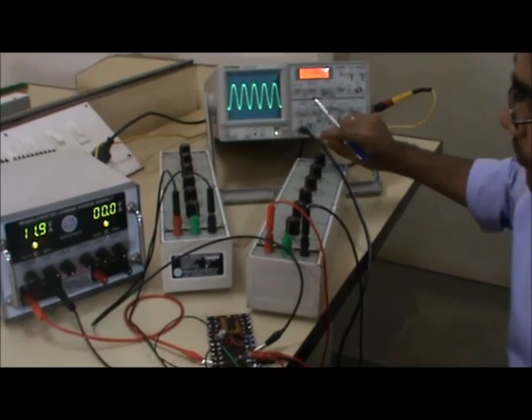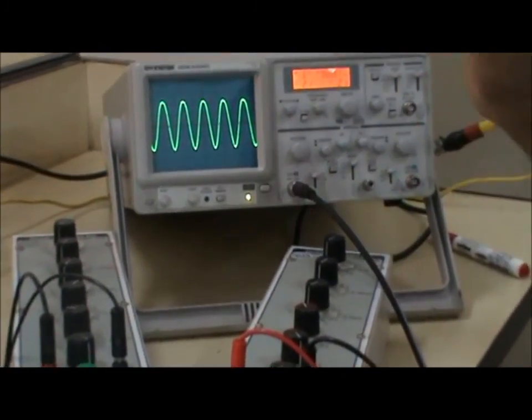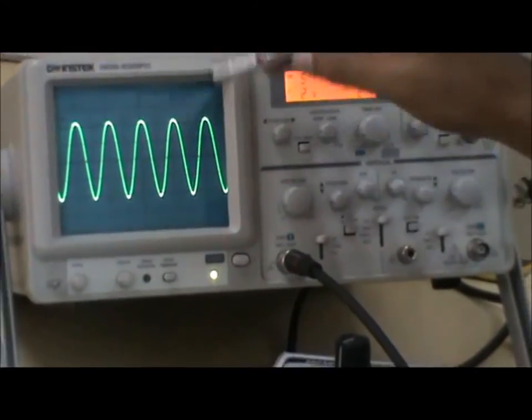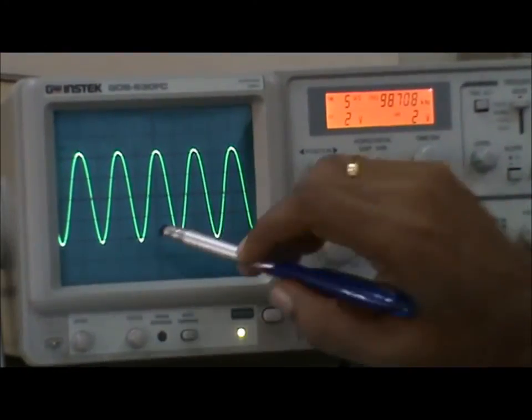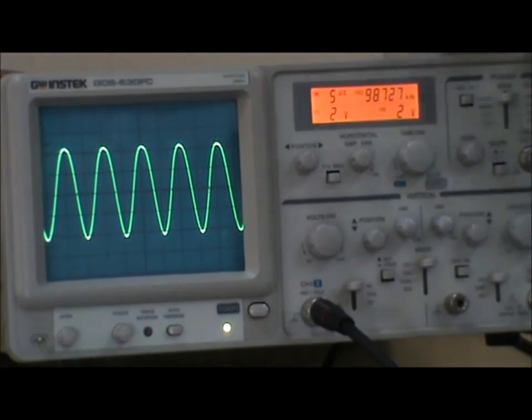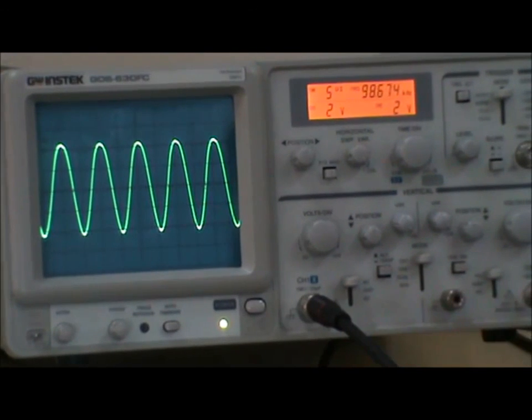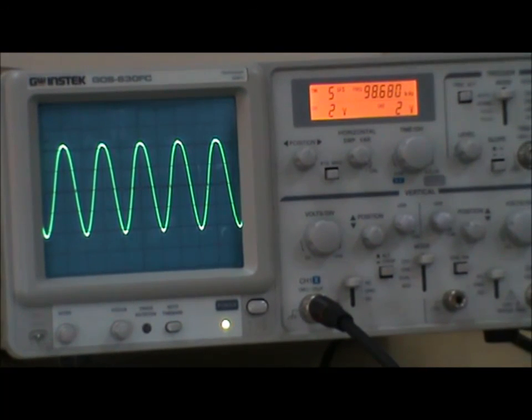The CRO is connected to the output side, with channel 1 connected to the collector terminal. The output signal has a frequency of 100 kilohertz and an amplitude of approximately 8 volts. This is the output waveform for the Hartley oscillator circuit.